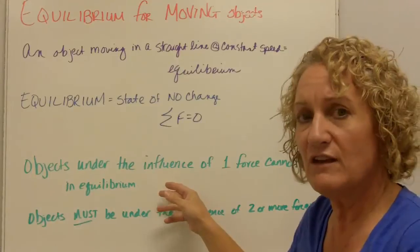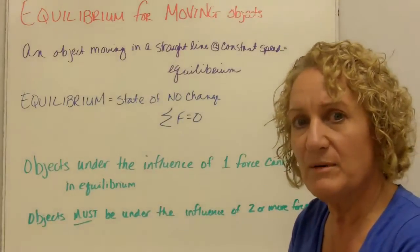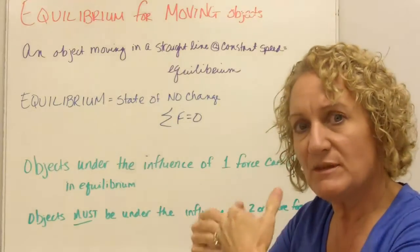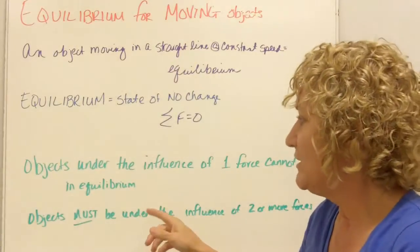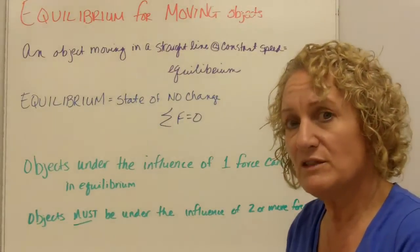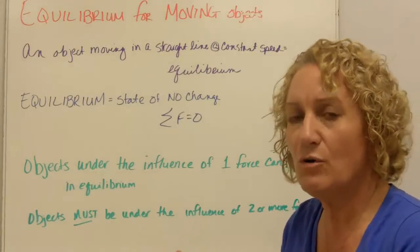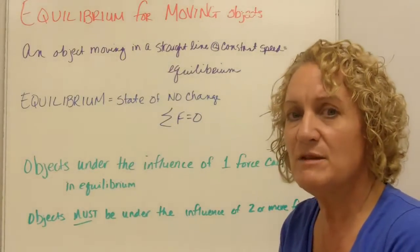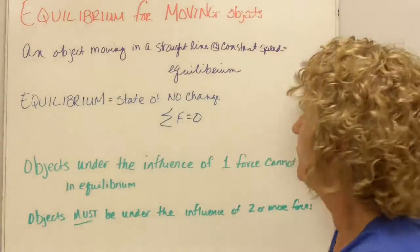If you have an object that's under the influence of only one force, it cannot be in equilibrium, because it needs to have something to balance it out. Objects must be under the influence of two or more forces. Sometimes it's three, sometimes it's five, sometimes it's a whole lot more than that. But it has to be more than one in order to have equilibrium.